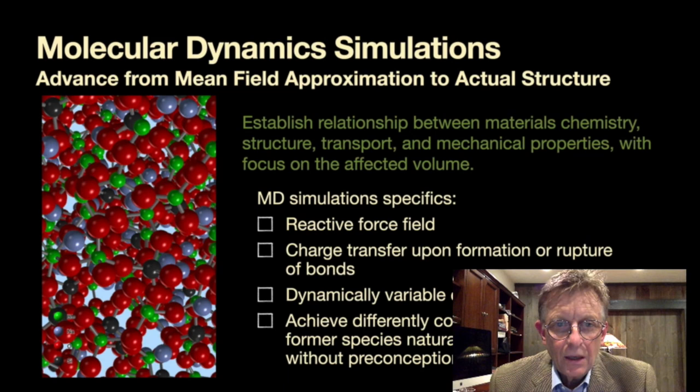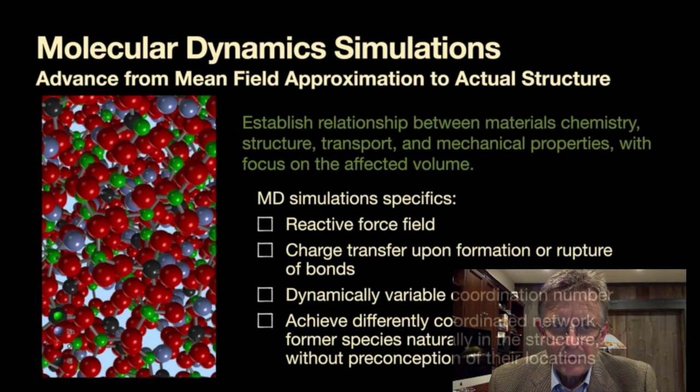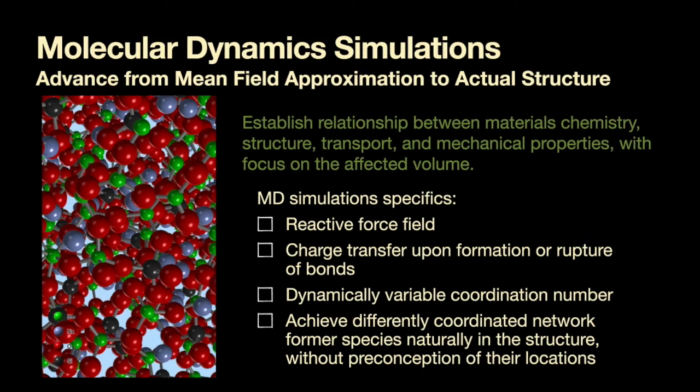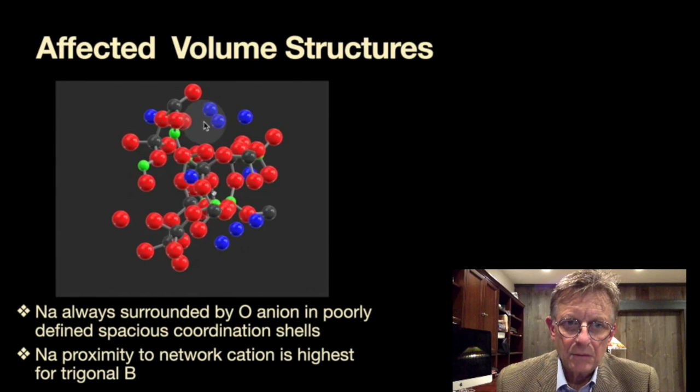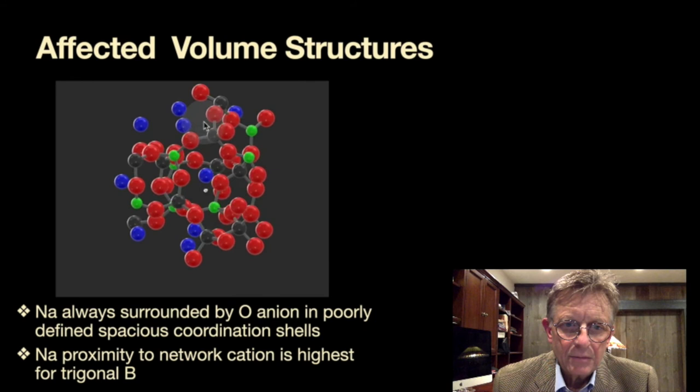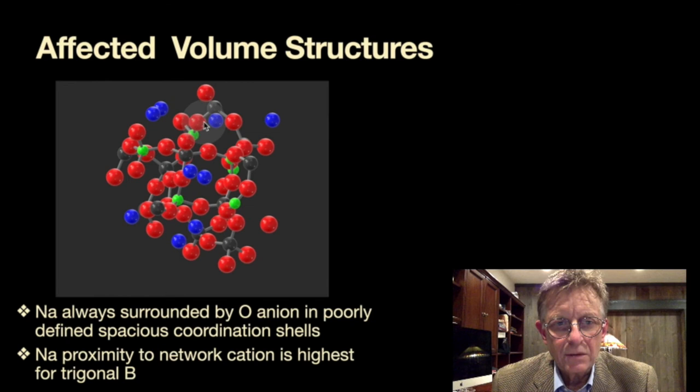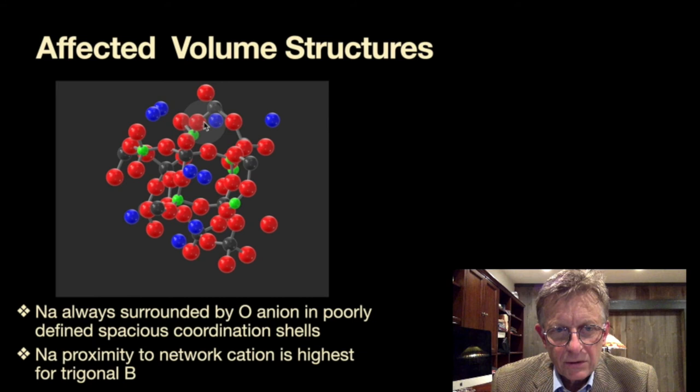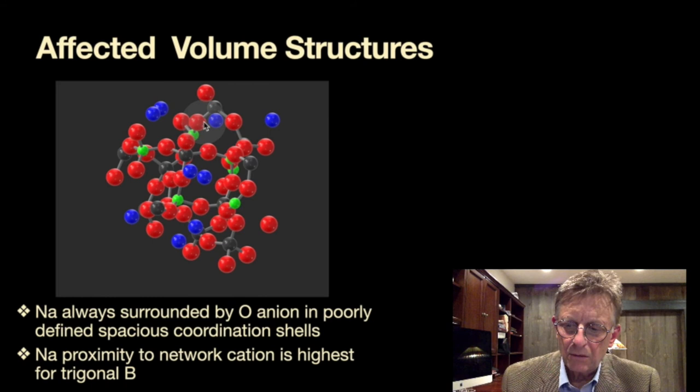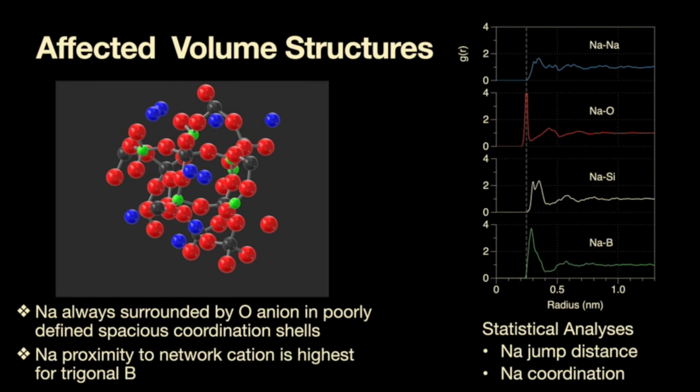I'll also save you the details on the molecular simulation methods except to say that we use a reactive force field so as not to preconceive the topology of the network, so we hope that the network will form in the simulations rather naturally. A lot of work goes into generating these realistic structures but once we have them we can analyze information that comes from it. Here's like a snapshot of the affected volume. You can see the blue atom in the center is the sodium, green is silicon, black is boron and of course as always oxygen is red. And you can gauge what the surrounding is, you can gauge what the gateways are that the ion has to go through but the information is complex and so we probably need some statistical analysis tools to make headway.